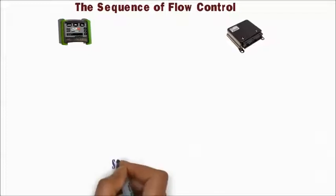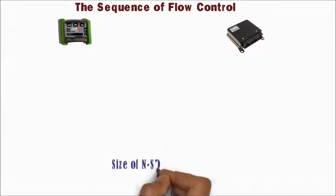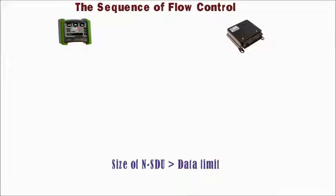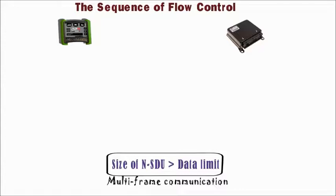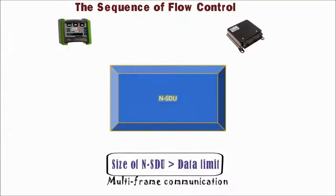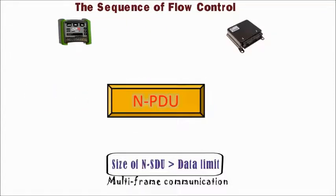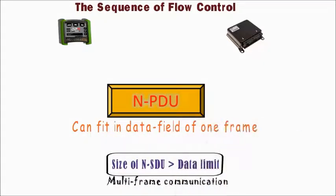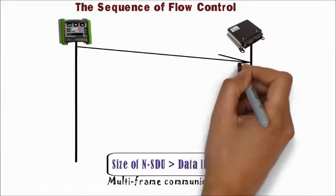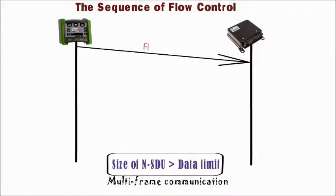Case 2: the size of NSDU is greater than the data limit. In this case, we use multi-frame communication. The NSDU is divided into multiple chunks, with each piece — after applying NPCI and forming NPDU — fitting in one frame of the underlying communication protocol, and transmitted one by one until the complete data is transmitted successfully. The transmitter sends the first piece as a first frame to the receiver.